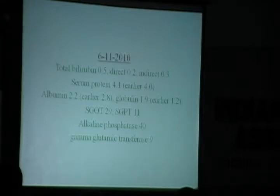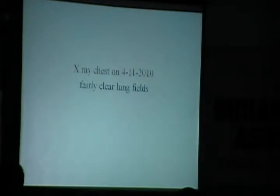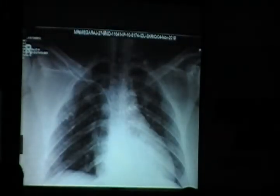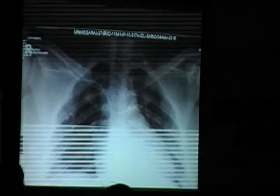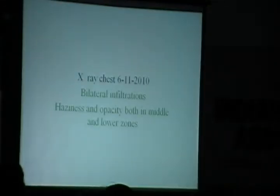Albumin dropped further to 2.2 and then to 1.9. A chest X-ray taken on the 4th of November showed fairly clear lung fields. However, by the 6th of November she had bilateral infiltrates in both middle and lower zones. The chest X-ray taken on the 6th of November was compared with the earlier one showing a clear progression.